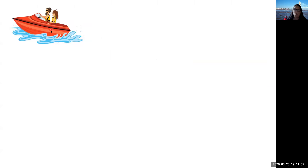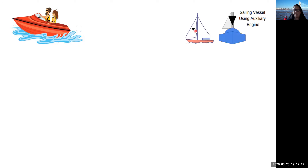First up, what kind of day shape would we put on our powerboat? None — it's quite obvious when we're looking at a powerboat that we can see it, so we don't need to add a day shape. Next up, what happens if we're a sailing vessel and for some reason we're going to be using our auxiliary engine — using the engine as well as having the sails up?